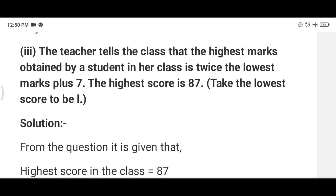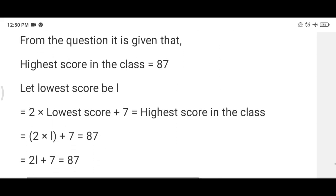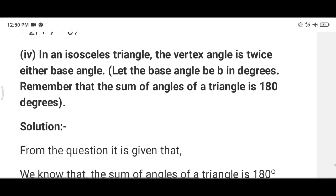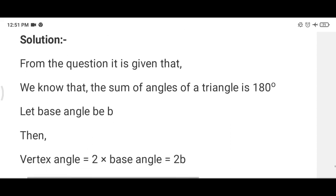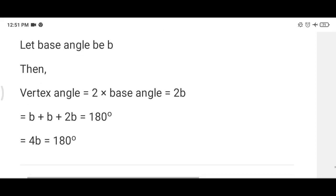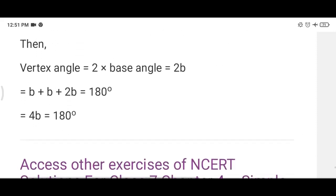In question number third, the teacher tells the class the highest mark obtained by a student in her class is twice the lowest marks plus 7. So here we will write lowest marks be L. So 2L plus 7 equals 87. In an isosceles triangle, everybody knows isosceles triangle has 2 angles equal. Vertex angle is twice base angles. Base angles are equal. So here we have taken base angle as B. And vertex angle is twice of base angle, that's why it is 2B. So B plus B plus 2B, because sum of three angles of a triangle is 180 degree. That's why 4B is equal to 180 degree. This is the equation.